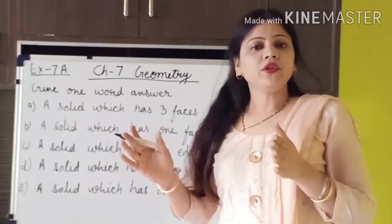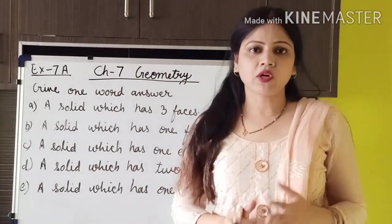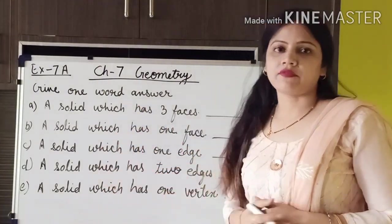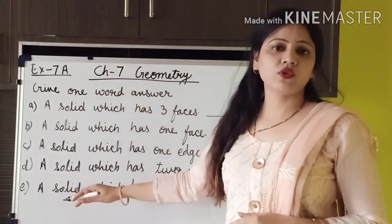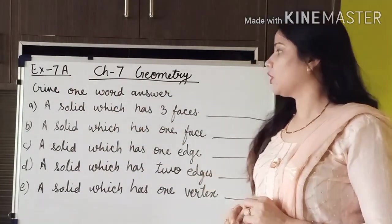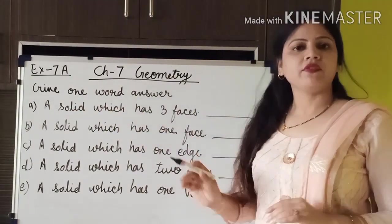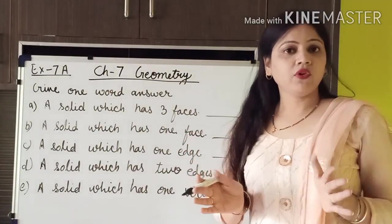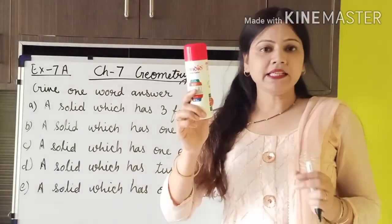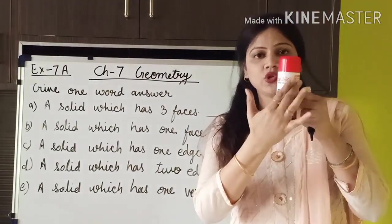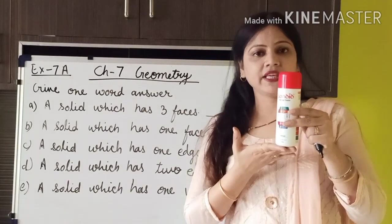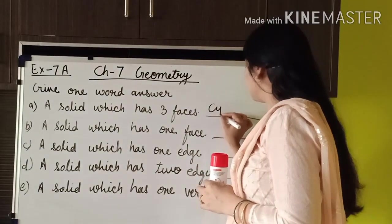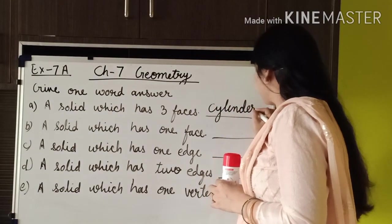According to the solid shapes I have already taught you, here I have given some questions from Exercise 7A. We have to write one word answers. A solid which has three faces — if you have remembered, the cylinder shape has three faces: two flat faces and one curved face. So here we will write the answer: cylinder.